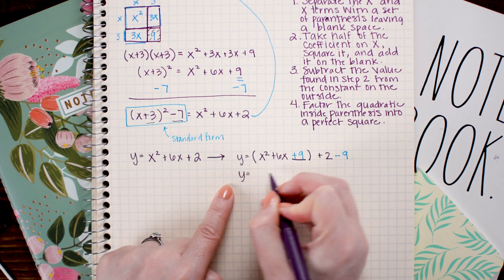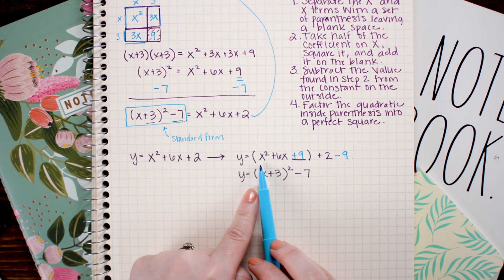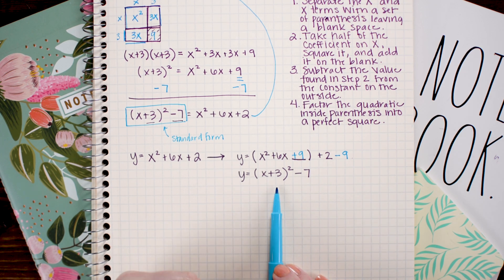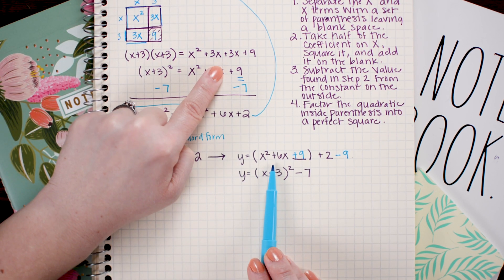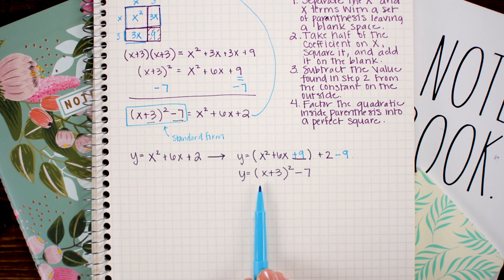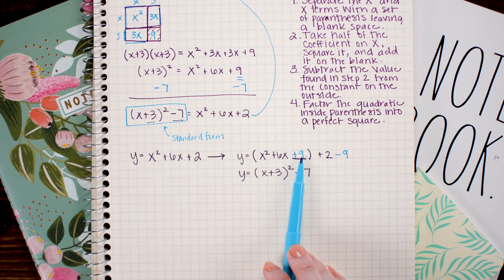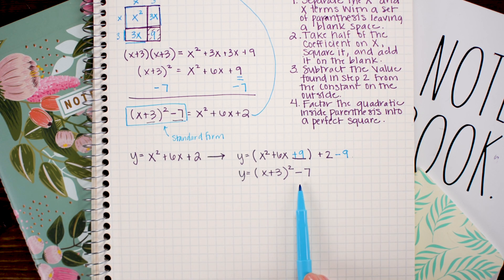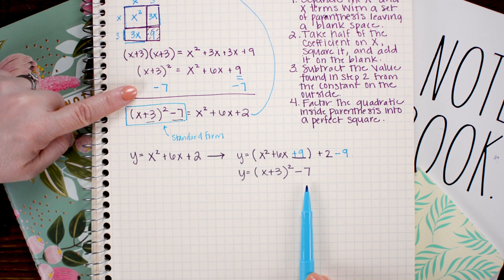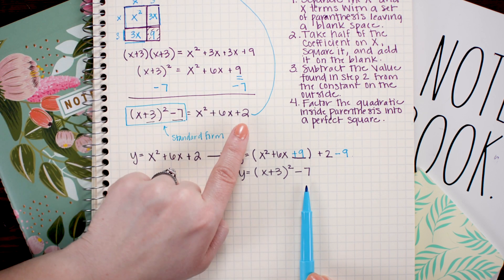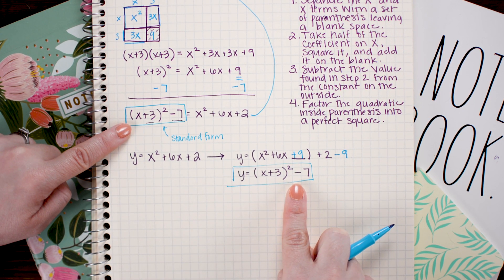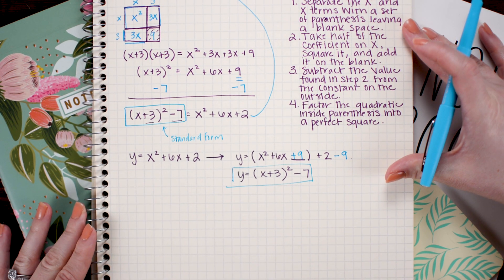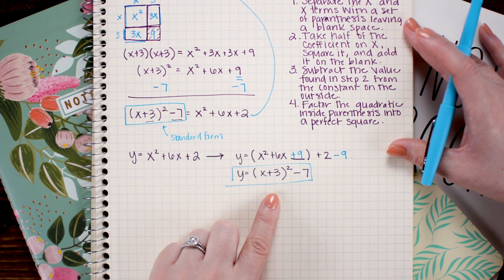The last step is to factor the quadratic inside the parentheses and combine the constants outside. The inside factors into x plus 3 squared — we already know this from our area diagram showing x plus 3 times x plus 3 equals x squared plus 6x plus 9. On the outside, 2 minus 9 gives negative 7. This matches our solution from the geometric method. Once you get the hang of the algebraic approach, it's really only a couple of steps to rewrite the equation in standard form.